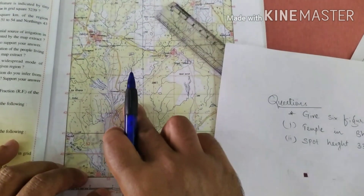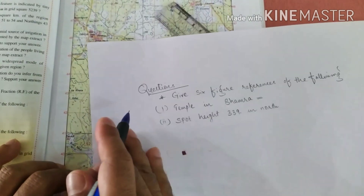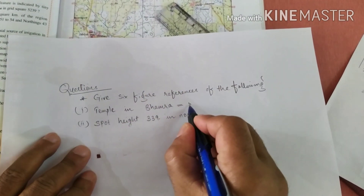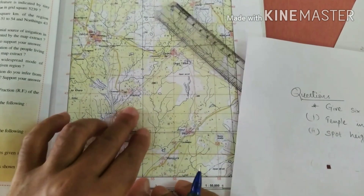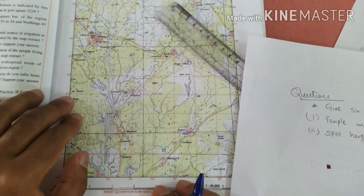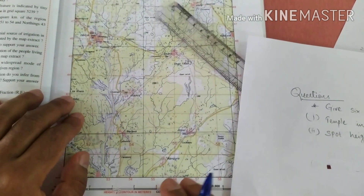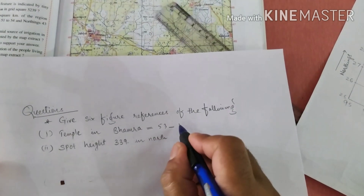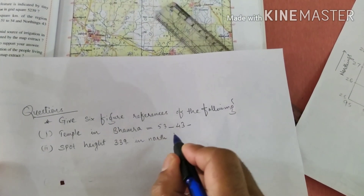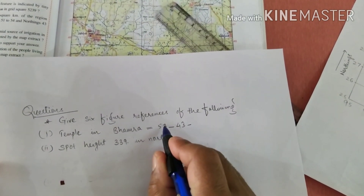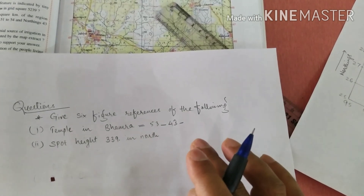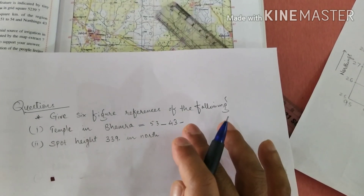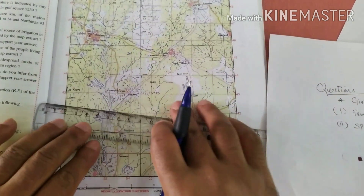The average number is 53 dash, and then 43 dash — this is the four-figure grid reference. Now the third figure and sixth figure we have to measure. Let's do it.